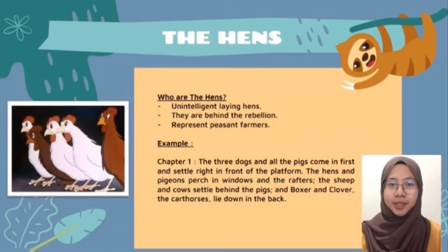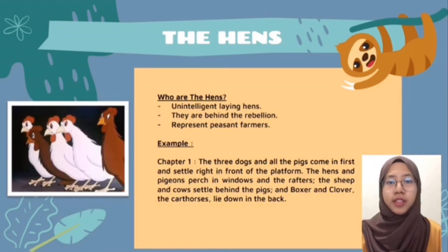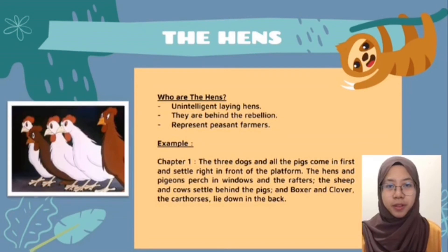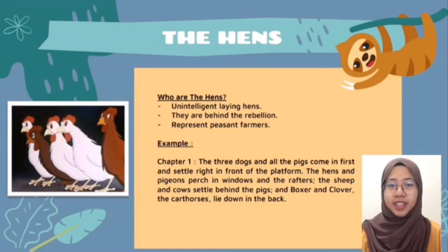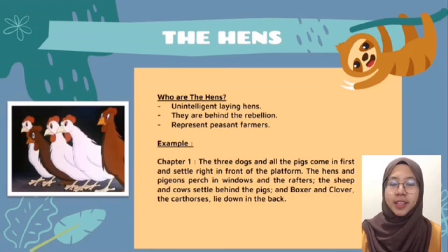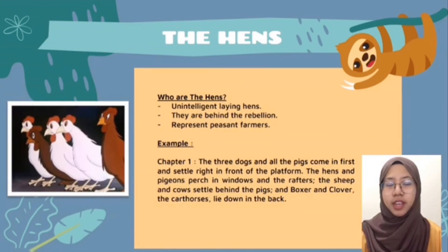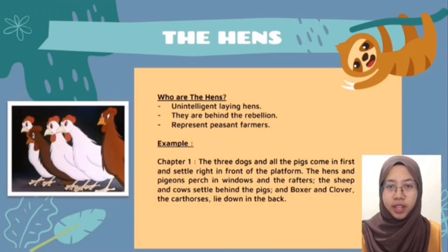I am Sufi Ali and I will continue the presentation with the hens. The hens are unintelligent animals in this novel because they cannot even memorize the Seven Commandments. They are behind the rebellion because Napoleon took their eggs and sold them to humans. But they got terrified of Napoleon after he asked them to surrender their eggs, and of course their plan was unsuccessful. The reason they are minor characters is that they have only been mentioned six times in the novel. Being unintelligent, they cannot come up with any ideas or opinions by themselves.